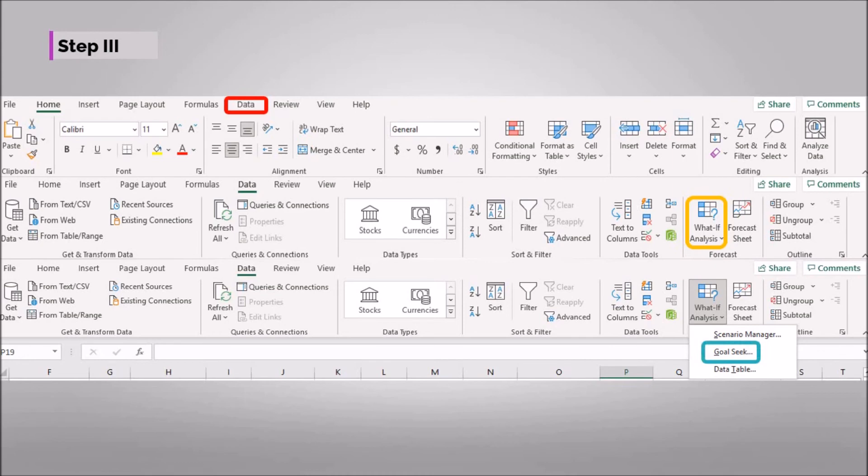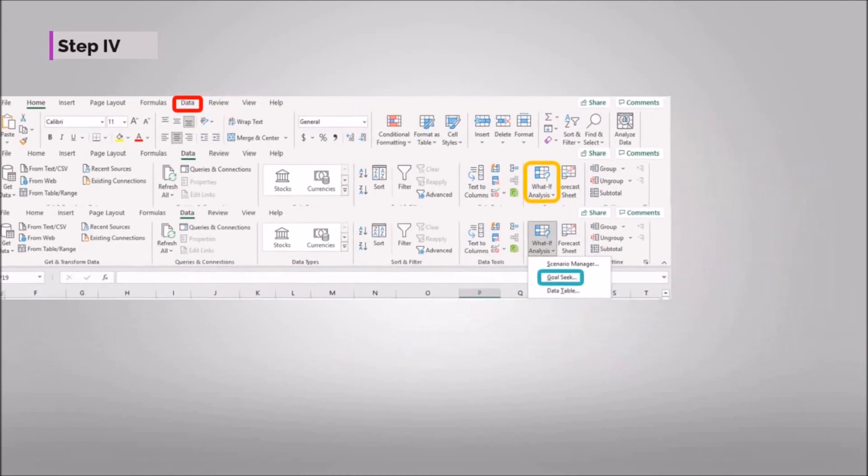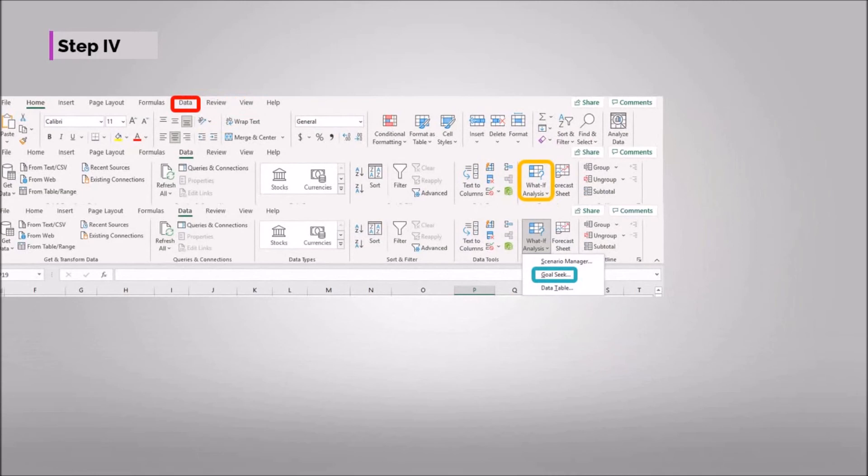After that, the Goal Seek table will open. Here you need to set the cell which contains the sum of all components to zero, and then use by changing cell tab to assign a void cell for V over F value, and click OK.